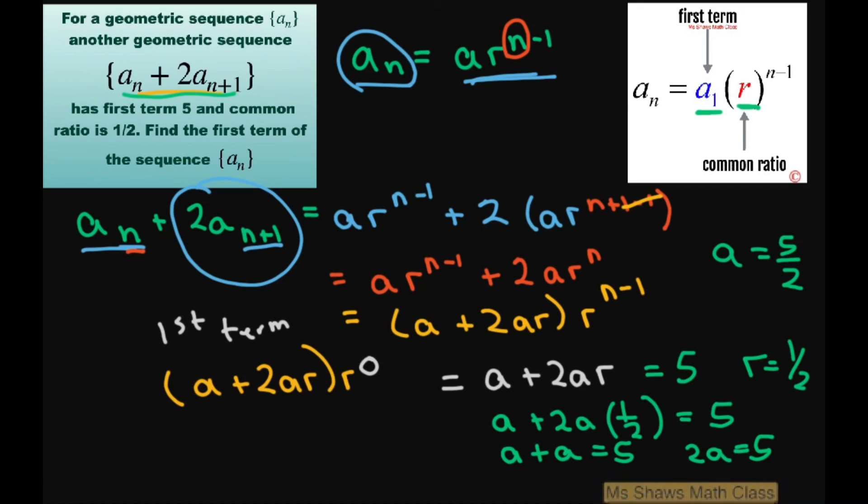And that's what we needed to find of the sequence. The first term is 5/2 and r is 1/2.